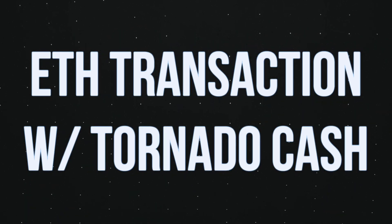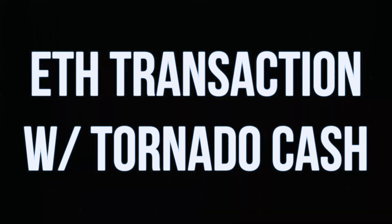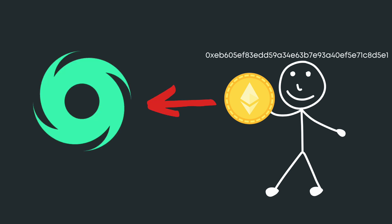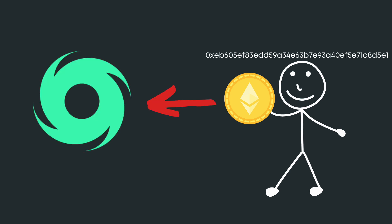Now this is where Tornado Cash comes in. Bob wants to disassociate himself from the ETH he received from Alice, and he also wants to disassociate it from himself. He takes his one ETH from his wallet and deposits it into Tornado Cash. He's given what could be considered a deposit slip, which he will use at a later time to withdraw his funds. At this point, Bob's original wallet now has zero ETH. While he waits, his one ETH is being cycled around in the pool of ETH that Tornado Cash has from other users also using the service.